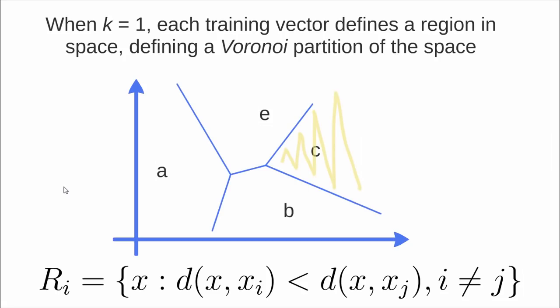For example, elements C, E, B, and A will define these very specific regions. This is a property of the KNN algorithm when K equals 1.